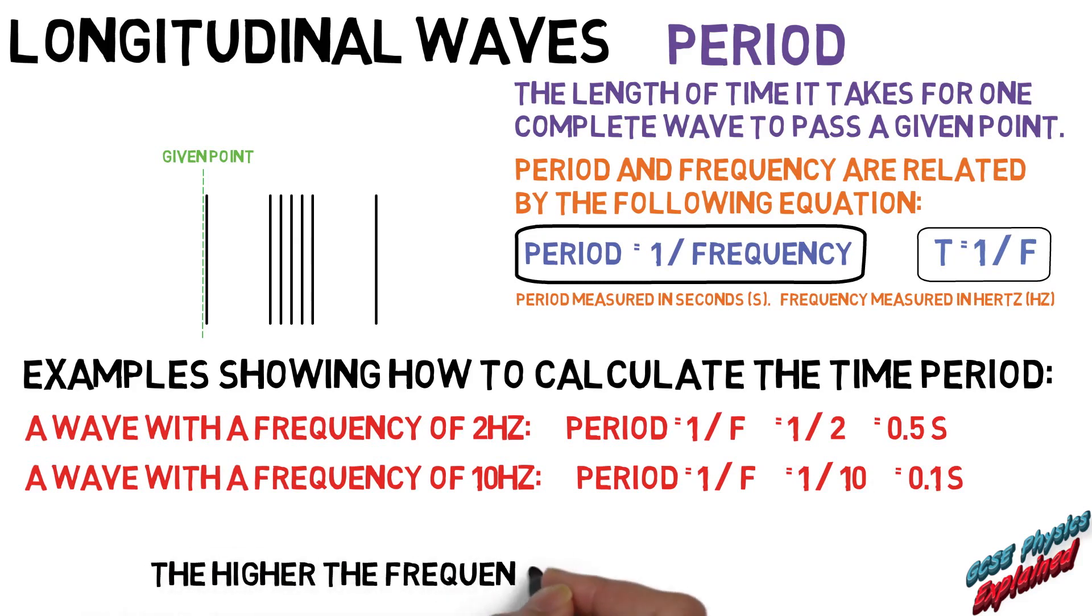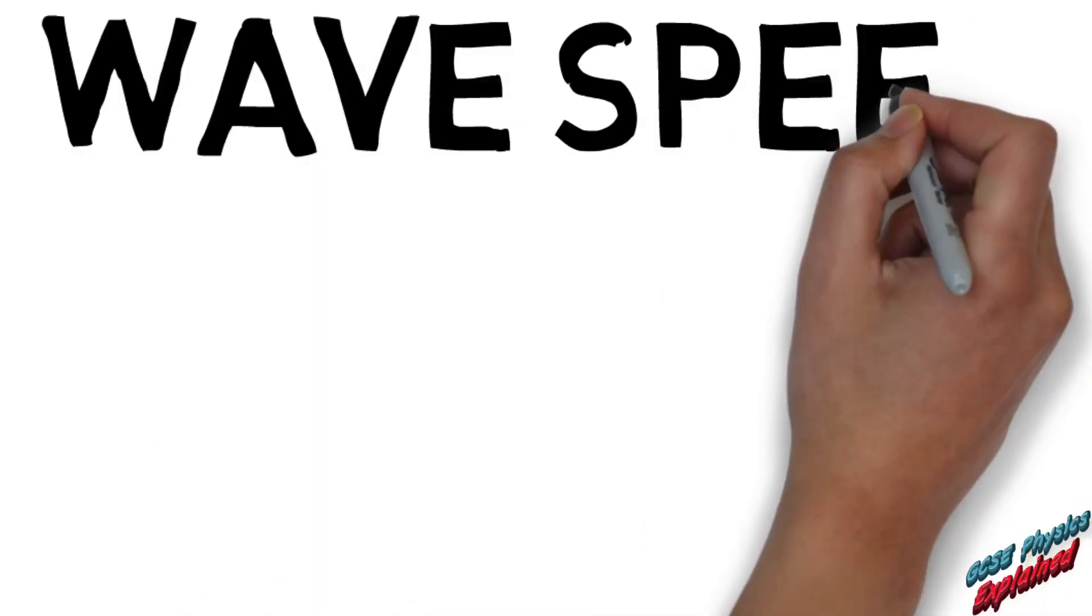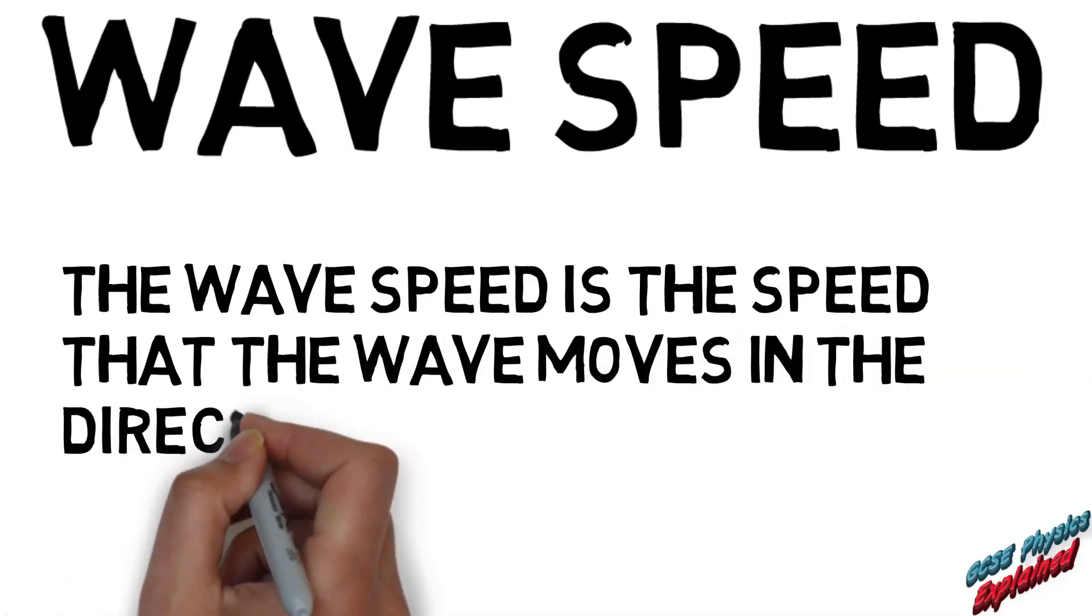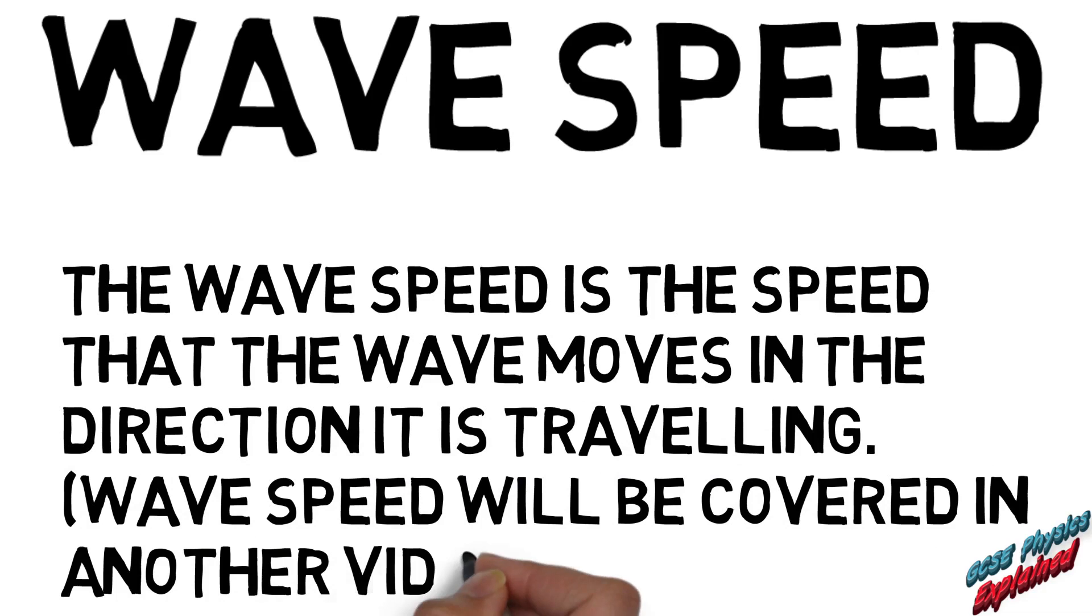The higher the frequency, the shorter the period. Wave speed: the wave speed is the speed that the wave moves in the direction it is traveling. Wave speed will be covered in another video in more depth.